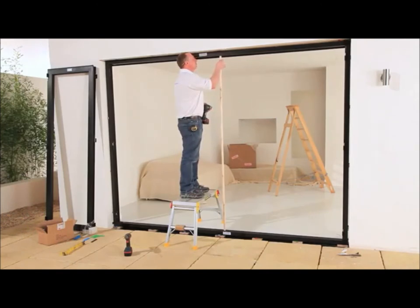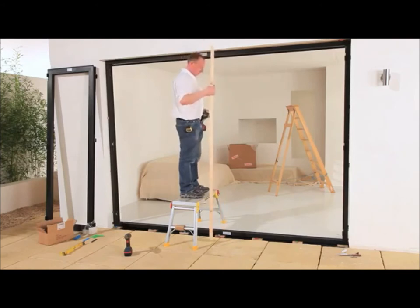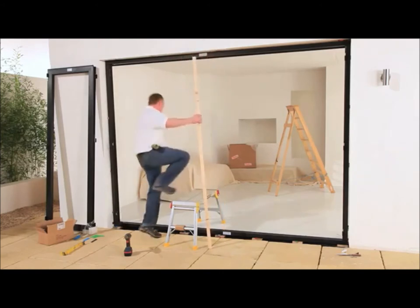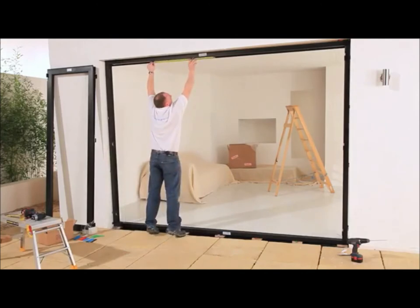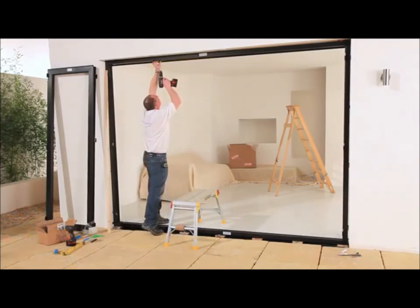Use your pinch rod or measuring stick to ensure the top track remains parallel to the bottom track. The top track fixings must be at either end, as well as at each door joint.